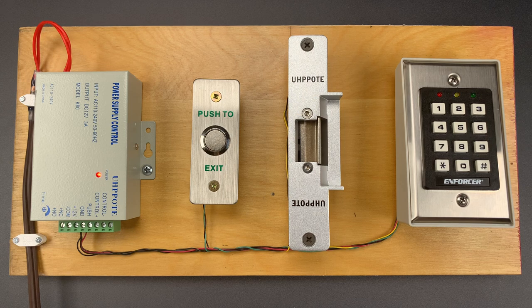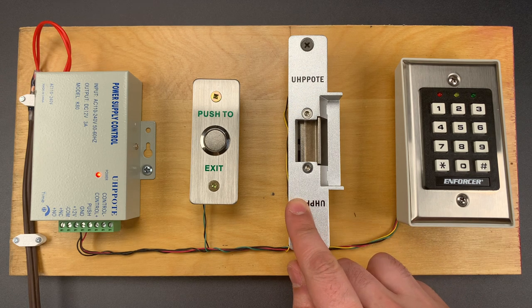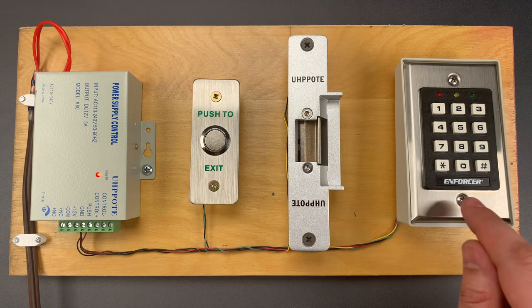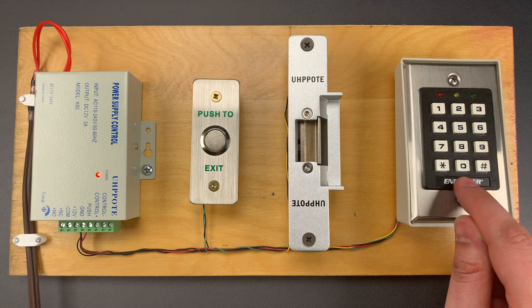They're made in China and branded under dozens of company names. For demonstration purposes, I've set this up with an electric strike plate. It opens when either the egress button is pressed from the inside of the door or the correct code is entered from the outside. That code is currently 1234.